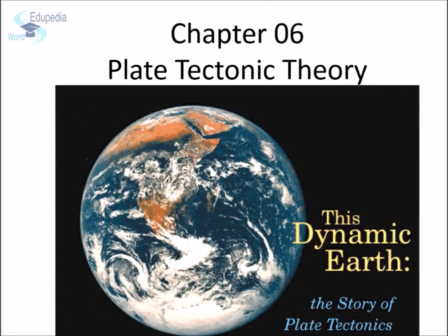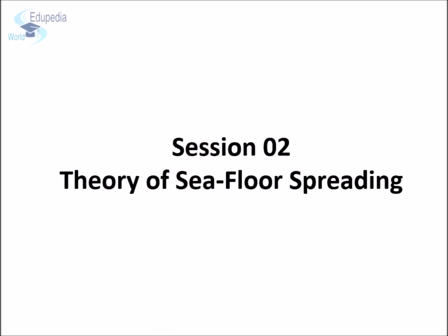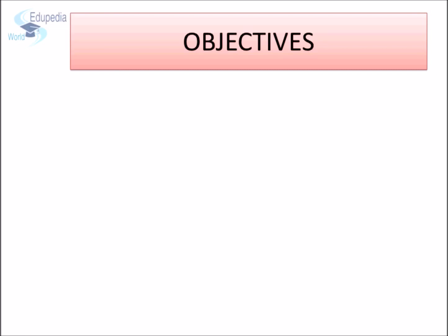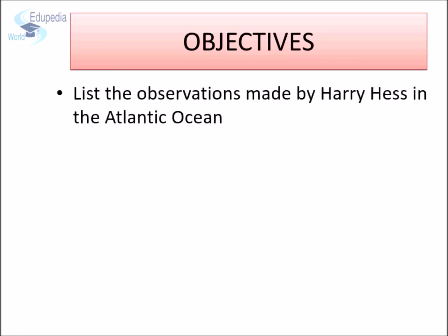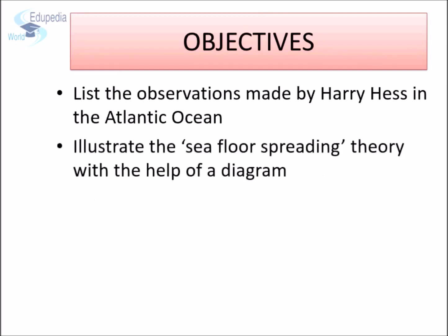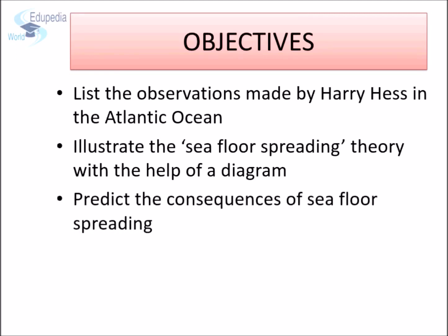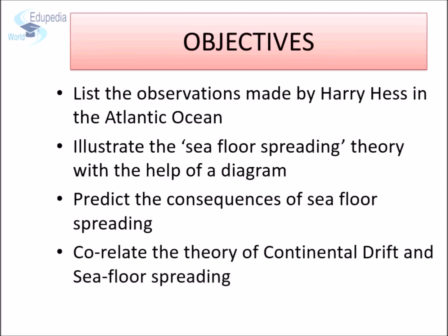This is the second session of this chapter: theory of sea floor spreading. In this session, we are going to achieve the following objectives: 1. List the observations made by Harry Hess in the Atlantic Ocean. 2. Illustrate the seafloor spreading theory with the help of a diagram. 3. Predict the consequences of seafloor spreading. 4. Correlate the theory of continental drift and seafloor spreading.